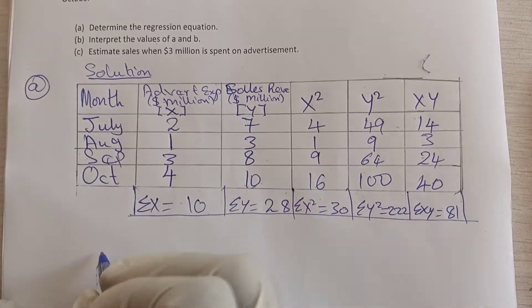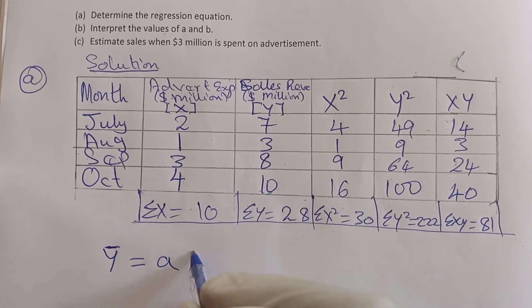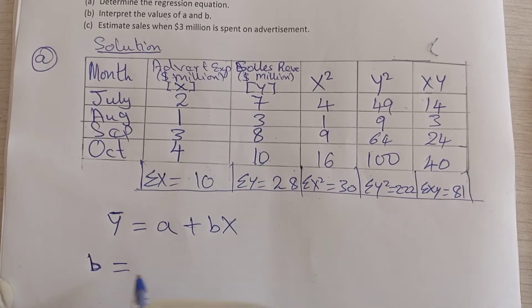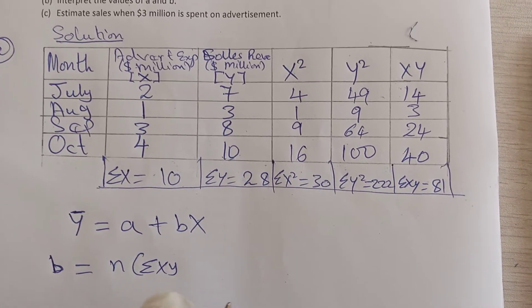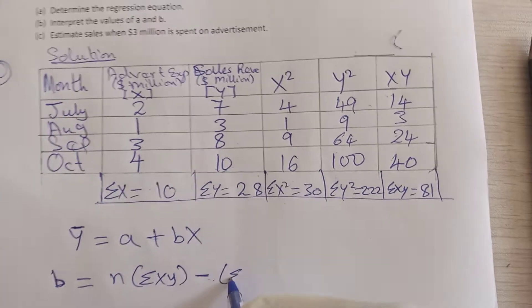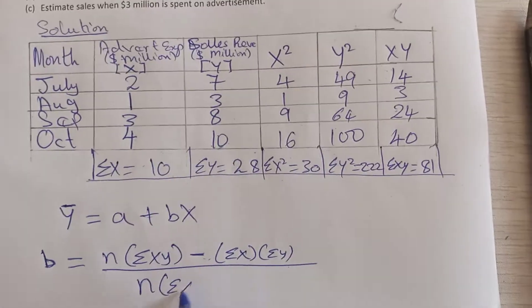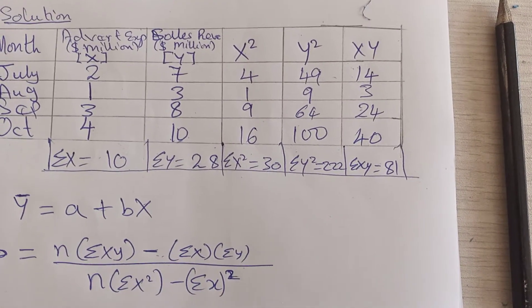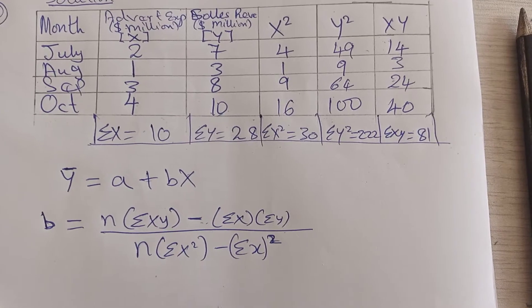Question (a) asks us to determine the regression equation. The regression equation is: y = a + bx. To find coefficient b, the formula is: b = [n(Σxy) − (Σx)(Σy)] / [n(Σx²) − (Σx)²]. This looks similar to the correlation coefficient formula, but please note it is not the same.